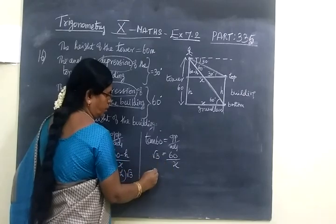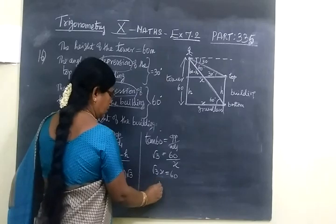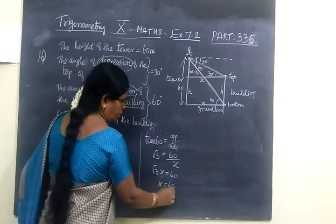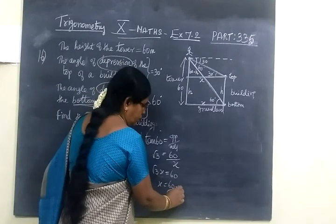Cross multiply. So root 3 x equal to 60. Then x equals to 60 by root 3. So denominator, the root 3, you can write, cross multiply the denominator.